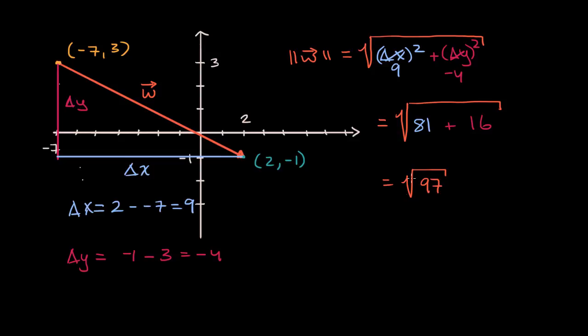So this is going to be equal to the square root of 97, which I don't think can be simplified anymore. But if you wanted to estimate what that is, that's almost the square root of 100. So this number is going to be a little bit less than 10, is the magnitude of this vector.